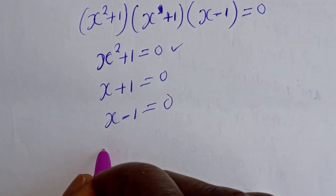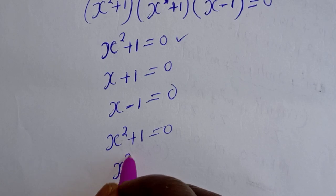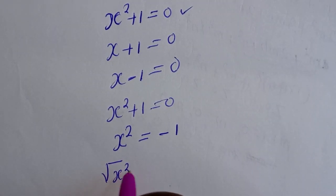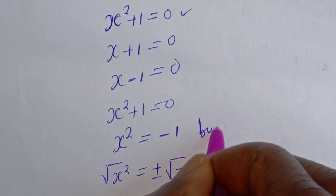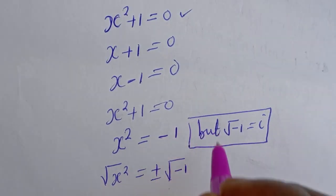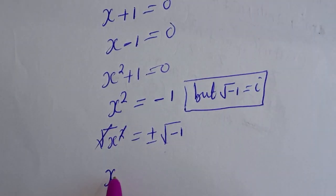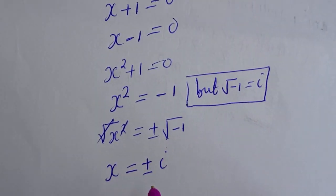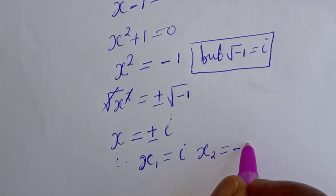From the first case, S squared plus 1 is equal to 0. Then S squared is equal to minus 1. Let's take the square root of both sides. The square root of S squared is equal to plus or minus the square root of minus 1. Since the square root of minus 1 is equal to i, S is equal to plus or minus i. Therefore, S1 is equal to i and S2 is equal to minus i.